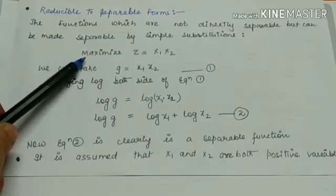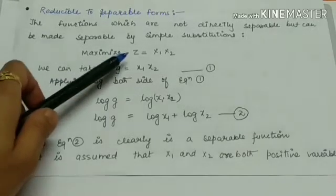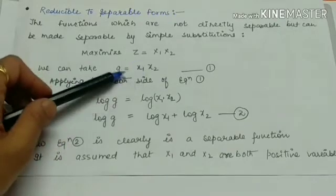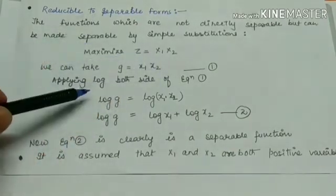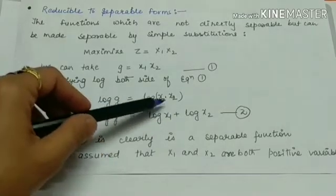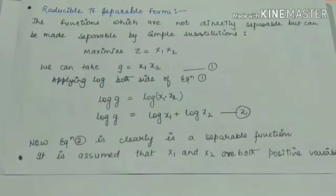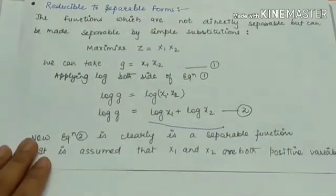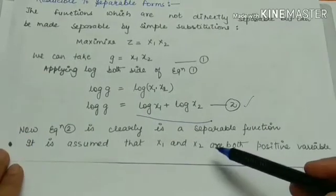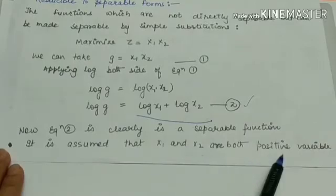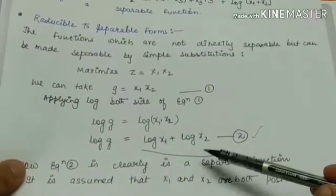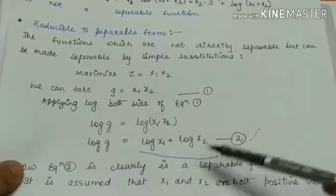For example, maximize g = x1 · x2. Since these are in multiplication, apply log to both sides: log g = log(x1 · x2). Using the logarithm property, log(x1 · x2) = log x1 + log x2. This equation is clearly a separable function, assuming x1 and x2 are both positive, since the logarithmic function is undefined for negative values.